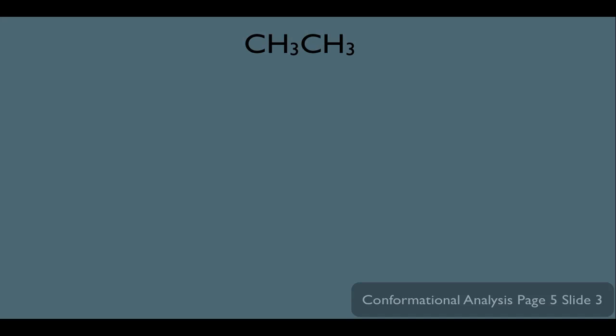Let's use a simple molecule — let's look at ethane right here. Let's generate a Newman projection for it. We'll call this carbon right here carbon 1; he'll be our front carbon, and we'll put this carbon right here in the back of our Newman projection. Notice both carbons have three hydrogens on them, so this would be our staggered Newman projection so far.